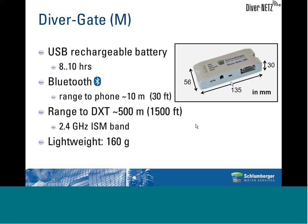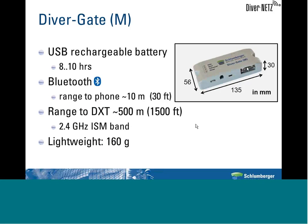The DiverGate M dimensions are about two inches wide, five inches long, and about an inch high. It contains a USB rechargeable battery that lasts for about eight to ten hours in the field. You can connect the DiverGate to your cell phone or pocket PC through Bluetooth, and they should be within ten meters of each other—but basically you carry the DiverGate with you as you carry your cell phone, so that range shouldn't be an issue.